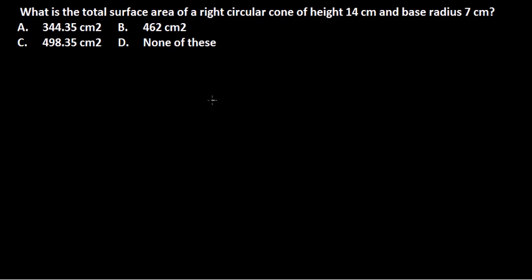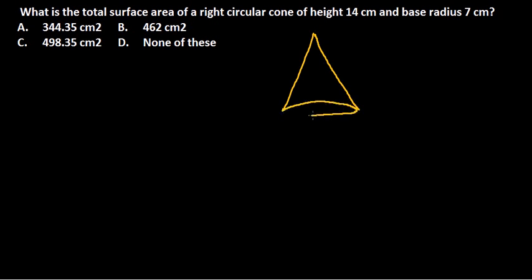Let's begin. What is the total surface area of a right circular cone of height 14 centimeters and base radius 7 centimeters? So the cone will look something like this. The base of the cone — the radius of the base — is labeled r, and the base radius is equal to 7 centimeters.